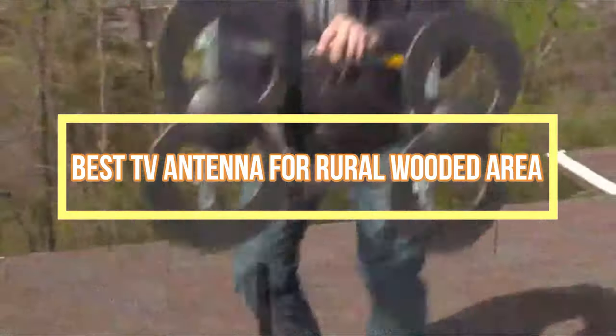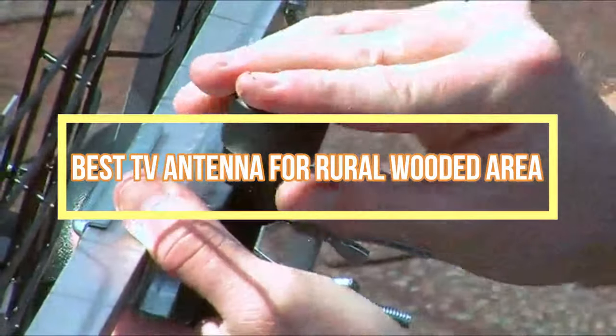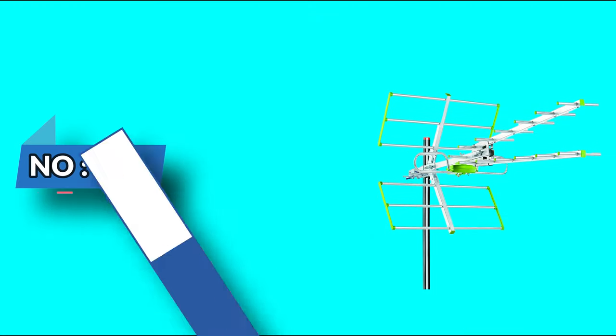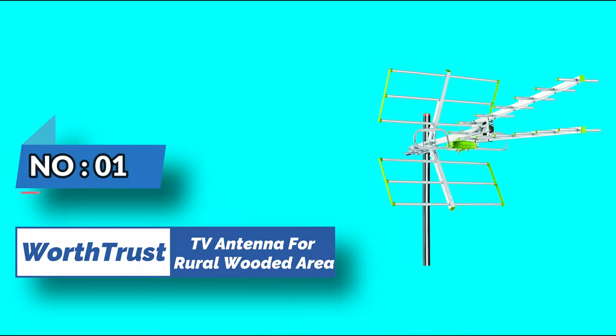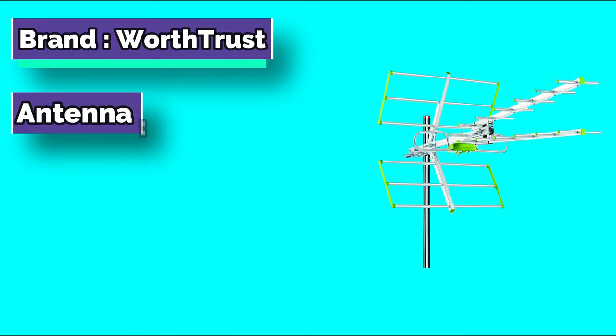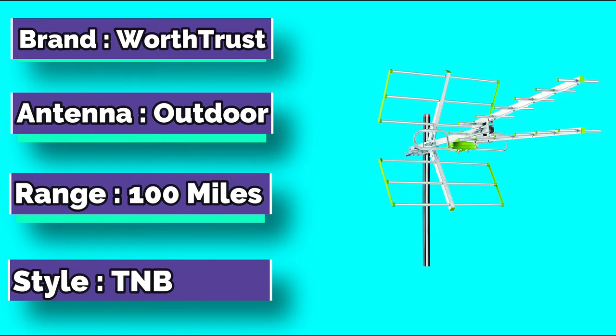Best TV Antenna for Rural Wooded Area. Number 1: WorthTrust TV Antenna for Rural Wooded Area. This new B-Bos has an extra long range that can capture 720p, 1080i, and 1080p.